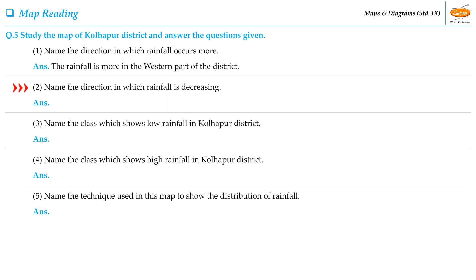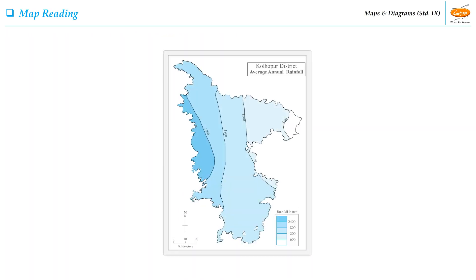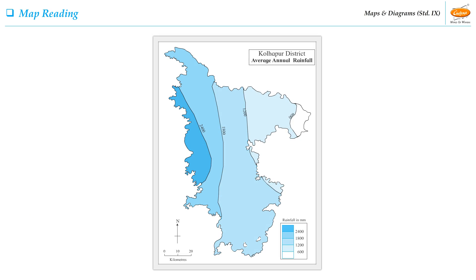Now let us see the second question of this activity: Name the direction in which rainfall is decreasing. As seen on the map, the rainfall is decreasing towards the east.